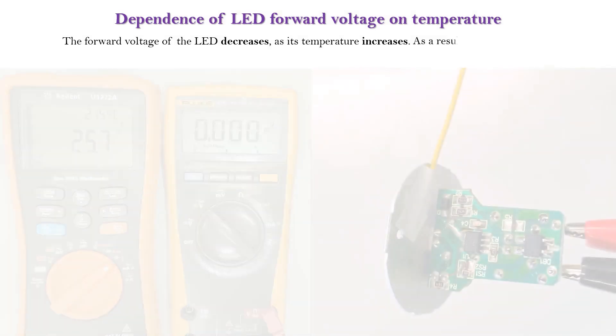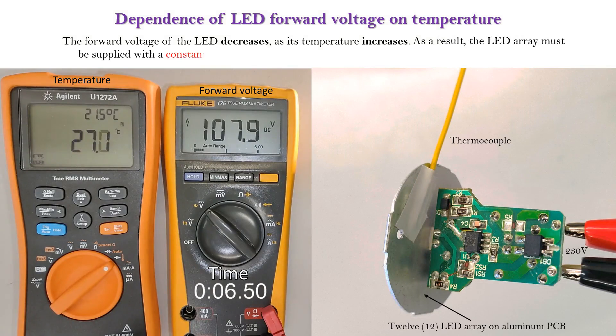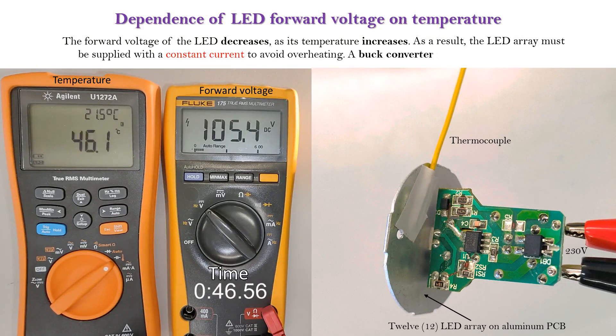As a result, the LED array must be supplied with a constant current to avoid overheating. A buck converter is used for this purpose.